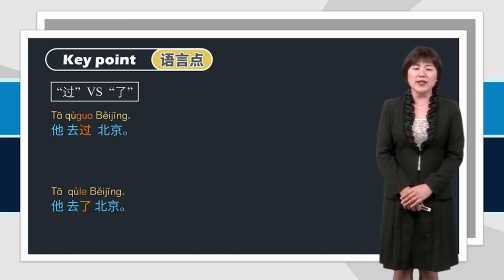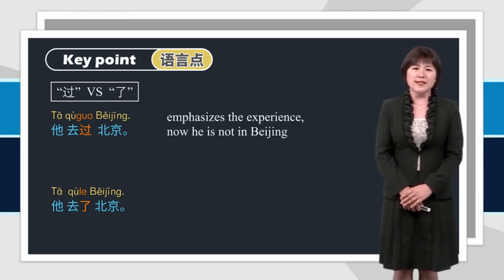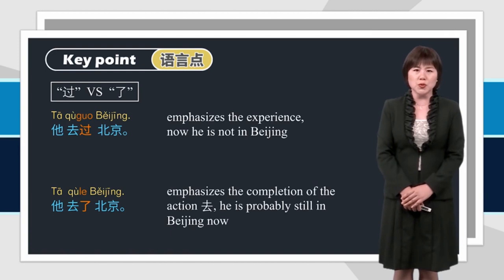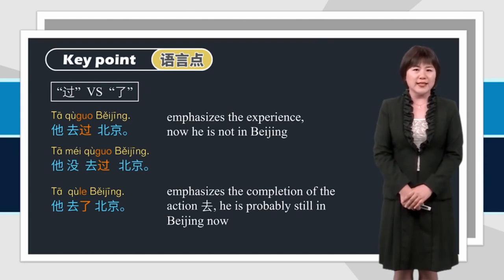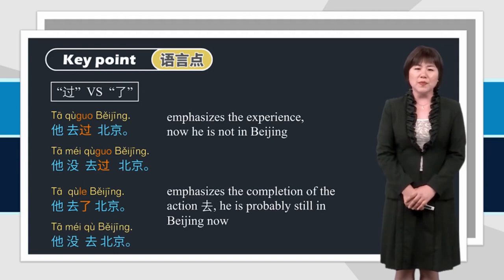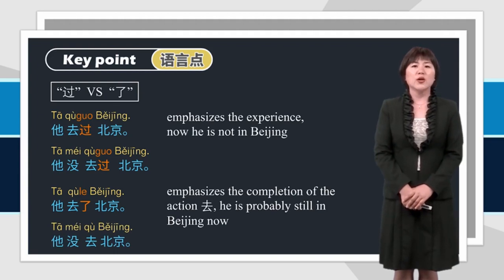她去过北京 emphasizes the experience — now she is not in Beijing. 她去了北京 emphasizes the completion of the action 去 — she is probably still in Beijing now. These two sentences are also different in the negative form: 她没去过北京 (过 is kept); 她没去北京 (了 is omitted).